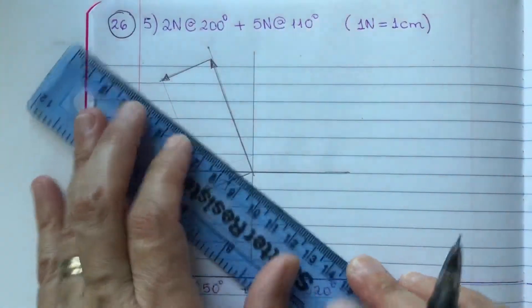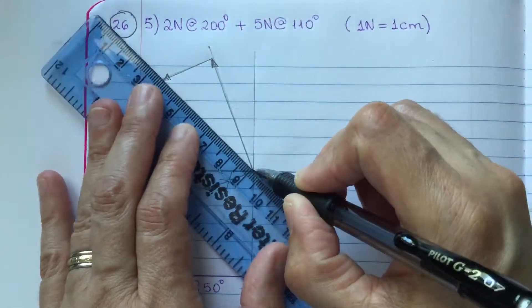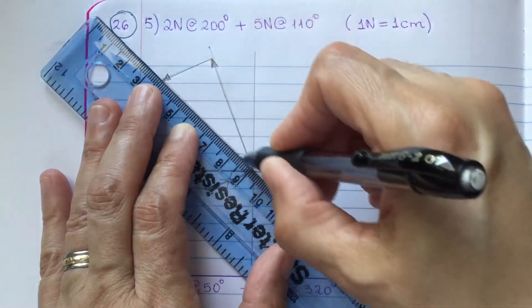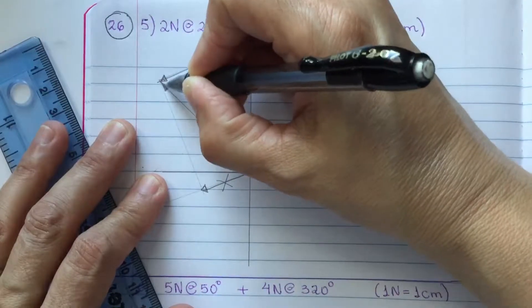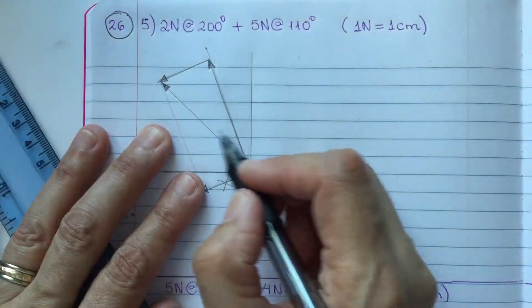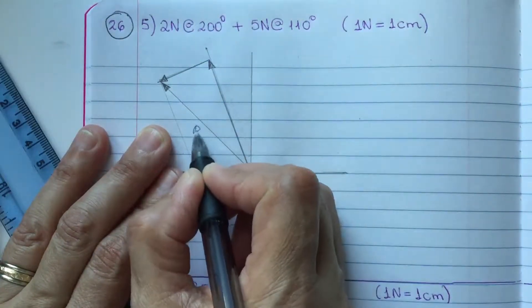Now, you are going to connect the long tail with the long tip, make a line, and use an arrow to indicate the direction of the resultant of this vector, or R.